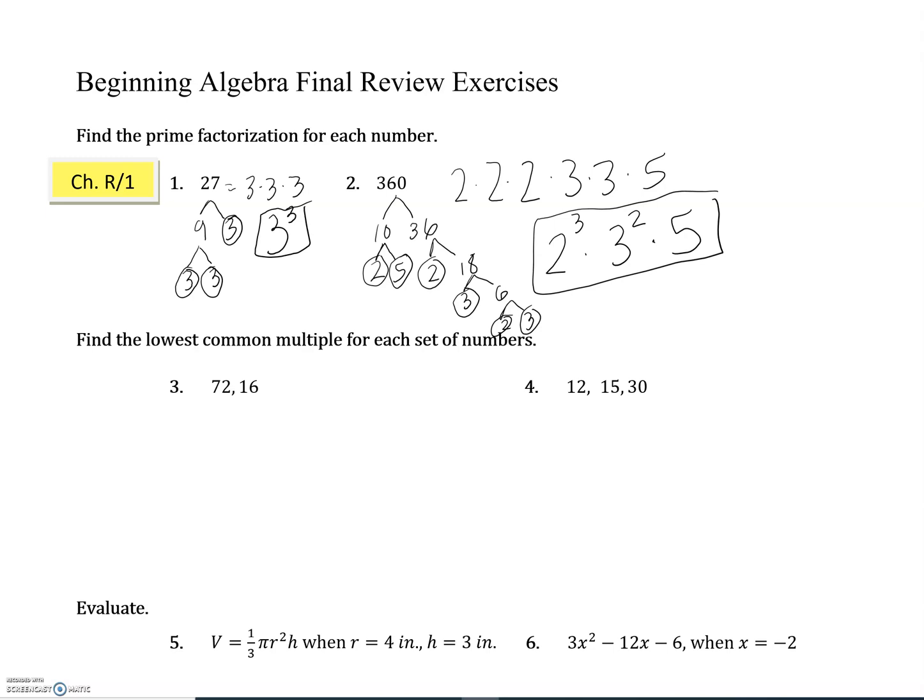Number three and number four both ask for the lowest common multiple of a set of numbers. Number three is just two numbers: 72 and 16. There are a couple different ways you can find the lowest common multiple. One way is just by writing out some multiples. So if we start with 72, the first multiple of 72 is of course itself. The next one would be 72 times 2, which is 144.